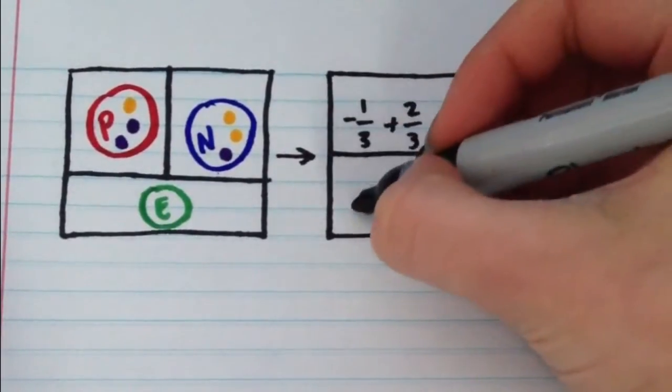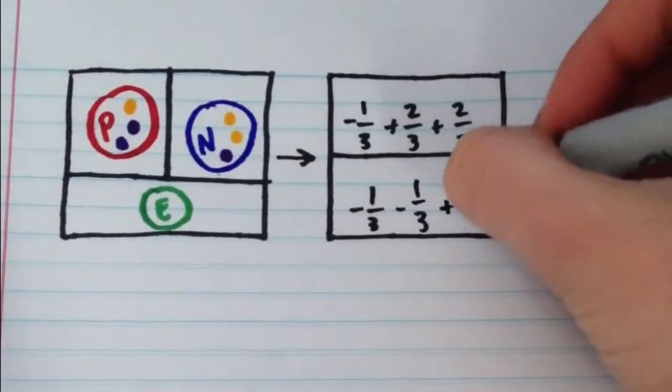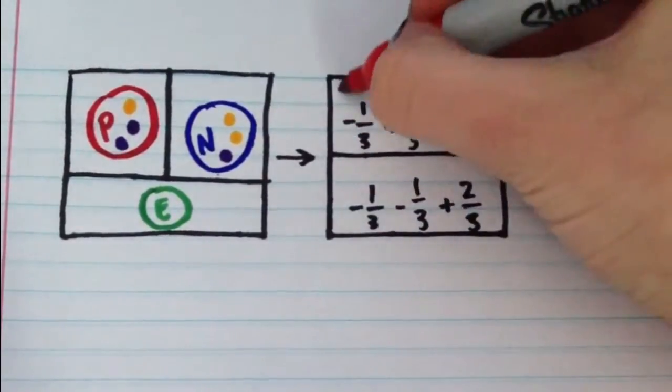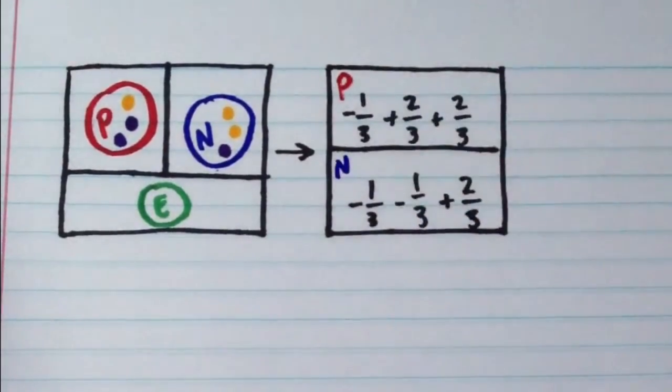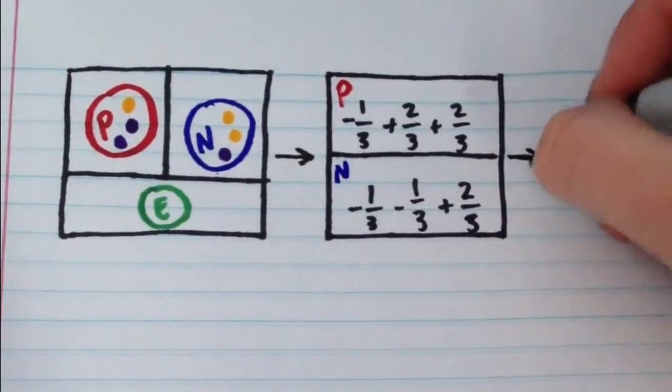A proton is made up of two up quarks, each with a charge of two-thirds, and a down quark with a charge of negative one-third. If you add up two-thirds, two-thirds, and negative one-third, you get three-thirds, or just one. That's why a proton has a positive charge.